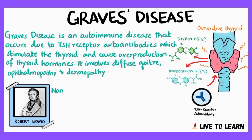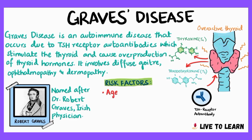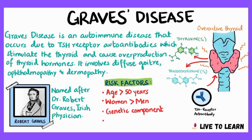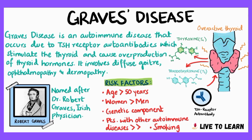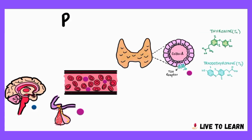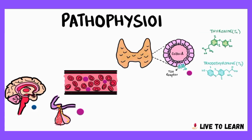It is named after Dr. Robert Graves, an Irish physician who described this form of hyperthyroidism about 150 years ago. Risk factors for Graves' disease include age over 50 years, female gender, genetic susceptibility, patients with other autoimmune diseases are more likely to be affected, and of course smoking.